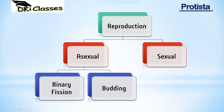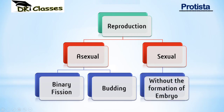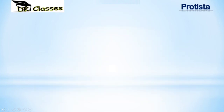In budding, when the bud becomes a little mature, it gets detached from the parent body and becomes a new organism — a new daughter cell. Sexual reproduction also occurs in Protista, but without the formation of an embryo, so there is sexual reproduction but no embryo is formed.